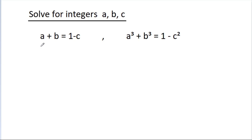In this video, we have given that a minus b is equal to 1 minus c, and a³ minus b³ is equal to 1 minus c². Then we have to solve for integers a, b, c. So we have two equations and three variables a, b, c.